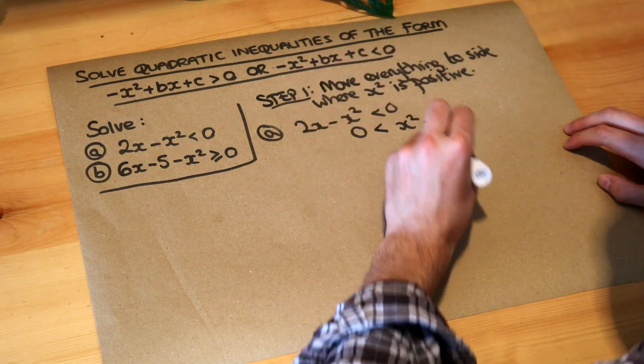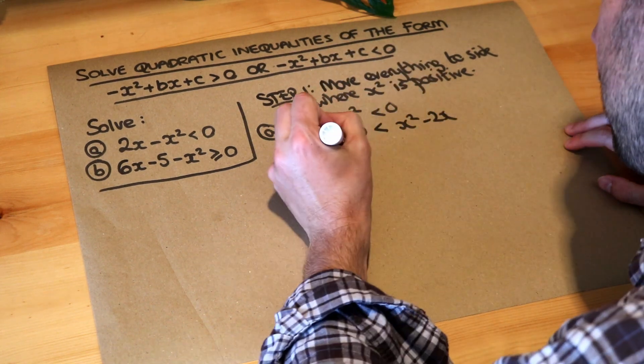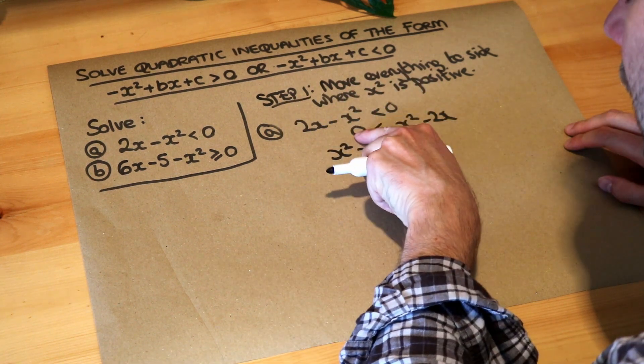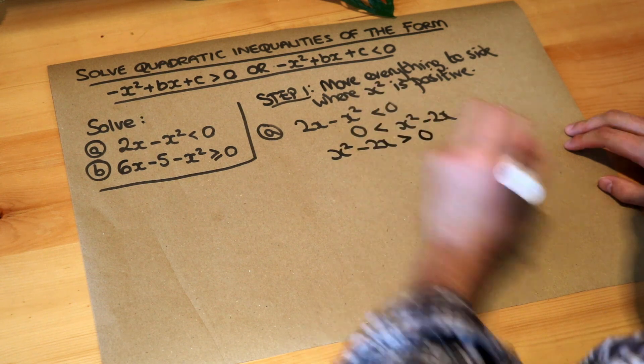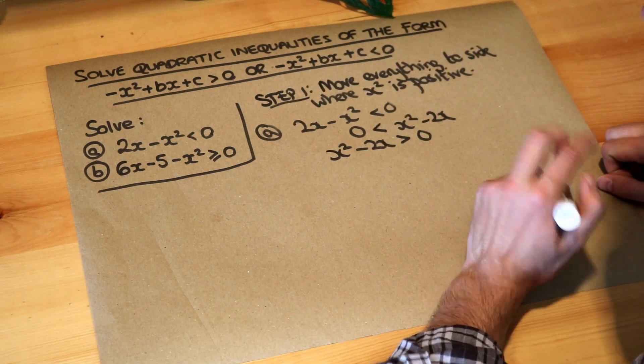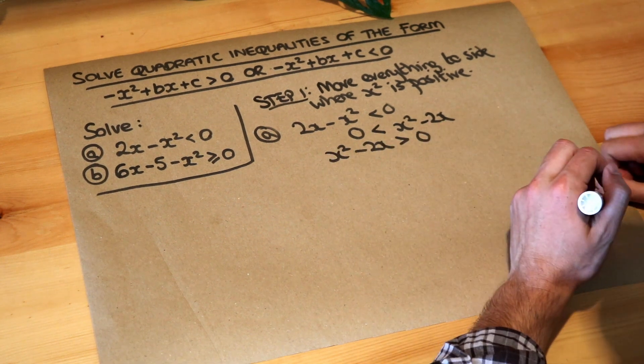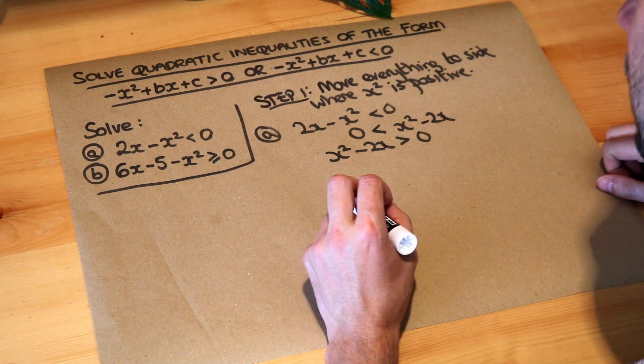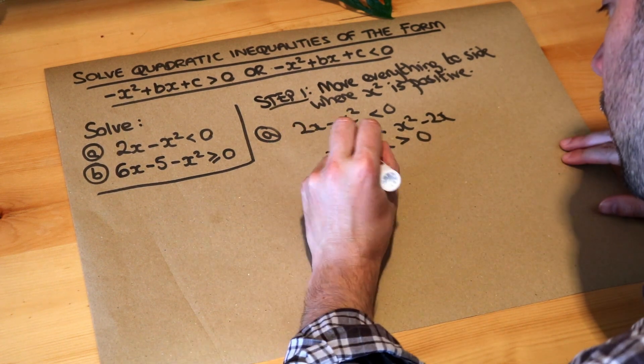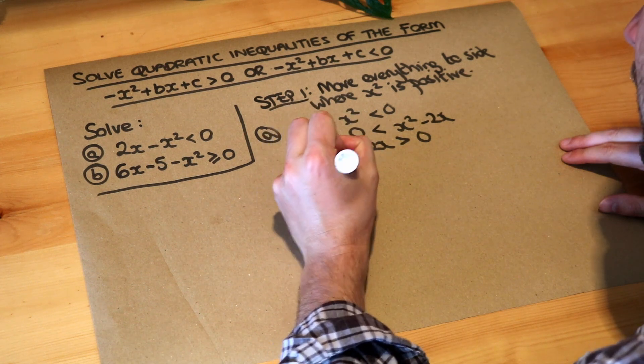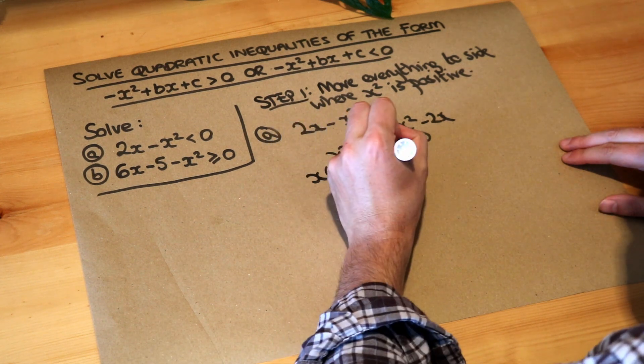Now just for the convenience we're going to flip the sides. So x squared minus 2x that is greater than zero. And now we've got a quadratic inequality which is in a more convenient form. What would we usually do next? Well we would factorise it, so in this case they both have a common factor of x so we do x brackets x minus 2 is greater than zero.